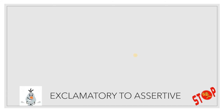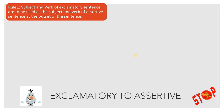Exclamatory to assertive: the subject and verb of the exclamatory sentence are used as subject and verb of the assertive sentence at the outset. 'How fortunate you are!' — the exclamation mark changes to a full stop, and we write 'You are very fortunate.' We cannot keep 'how fortunate you are' in assertive form; we simply write the sentence the opposite way.